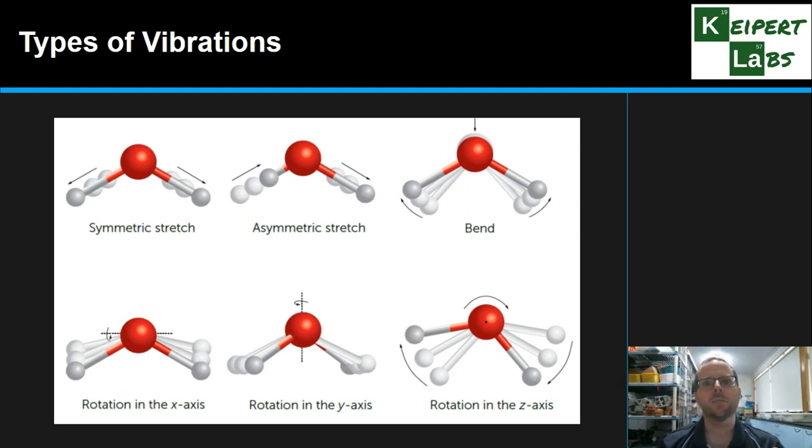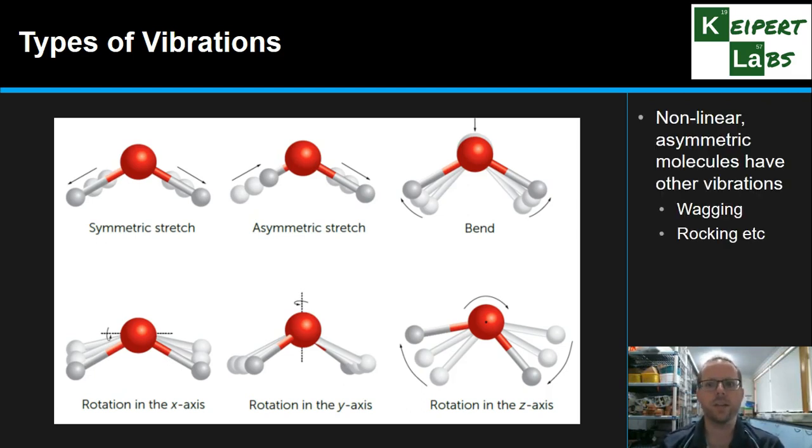As we start to add in more atoms, we can also get different types of movements called wagging and rocking and things like that, that are for non-linear but asymmetric molecules. So this one's a symmetrical molecule, so we get a range of different vibrations here. So essentially, the different types of covalent bonds and the different positions that they have will cause different resonance frequencies that you might get, resonate at different amounts of energy.